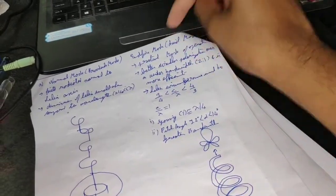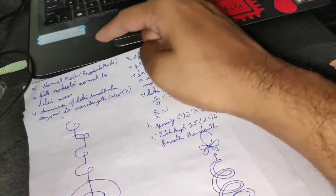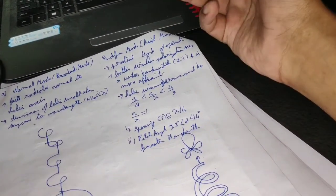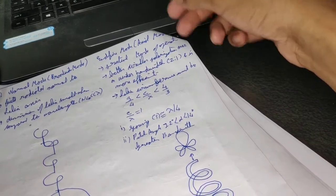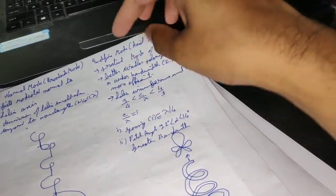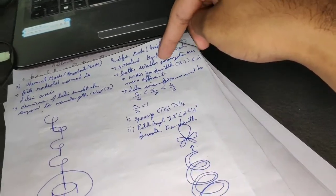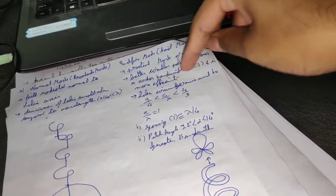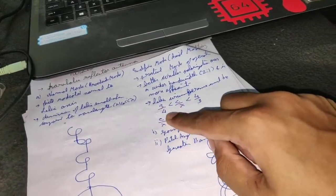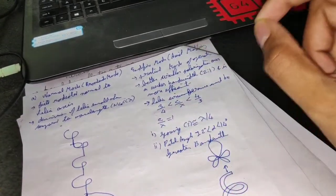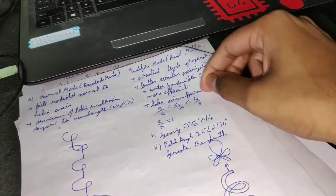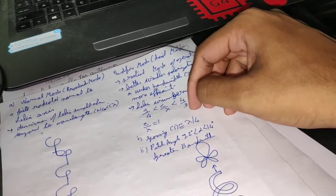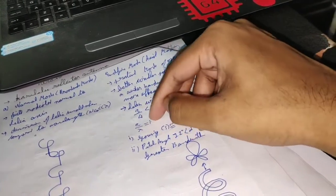We primarily use end-fire (axial) mode rather than normal (broadside) mode because it is more practical, offers better circular polarization, wider bandwidth, and is more efficient. For this mode, the circumference condition must be satisfied: C/λ must lie between 3/4 and 4/3, with C/λ = 1 being the ideal center value.